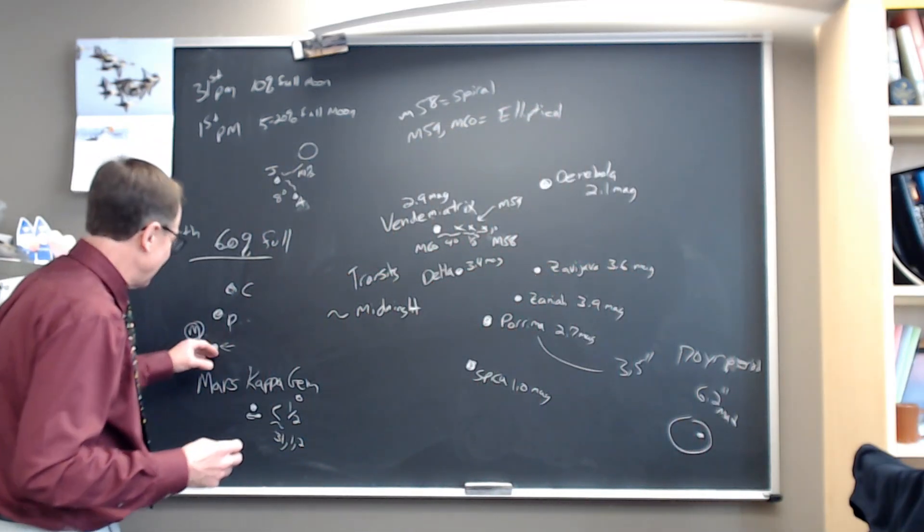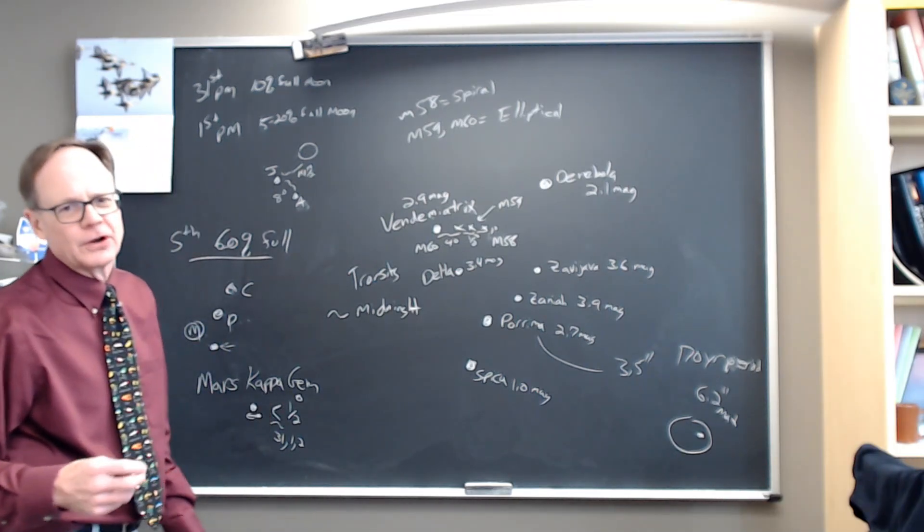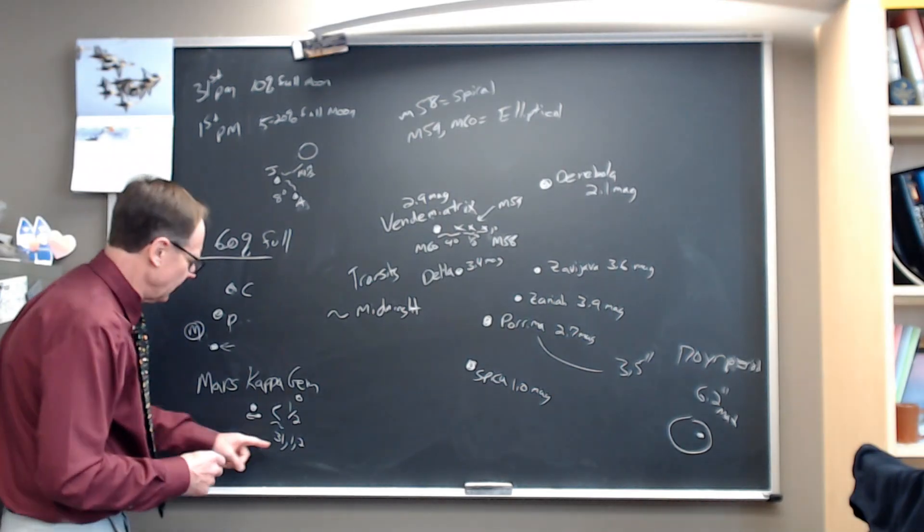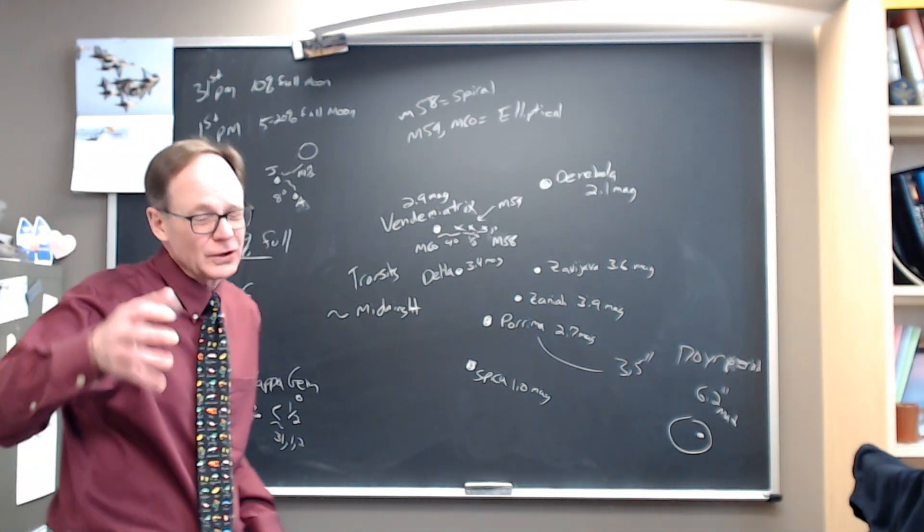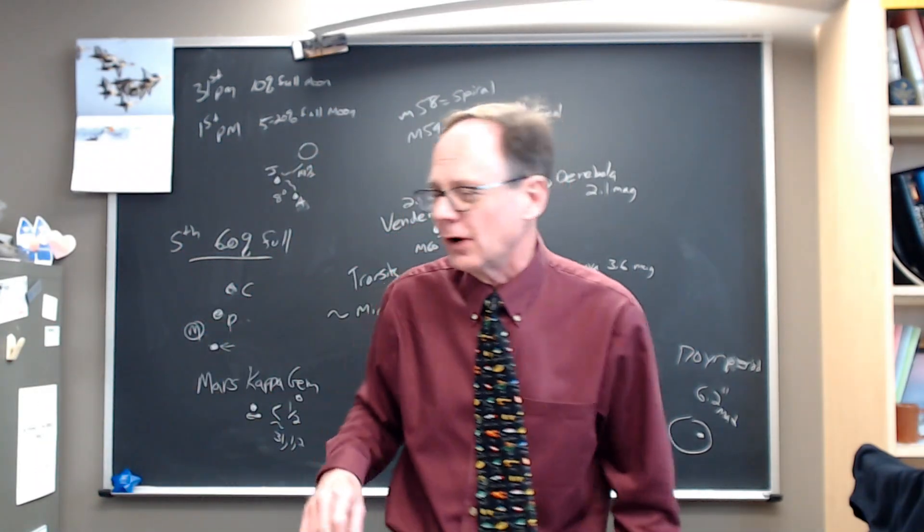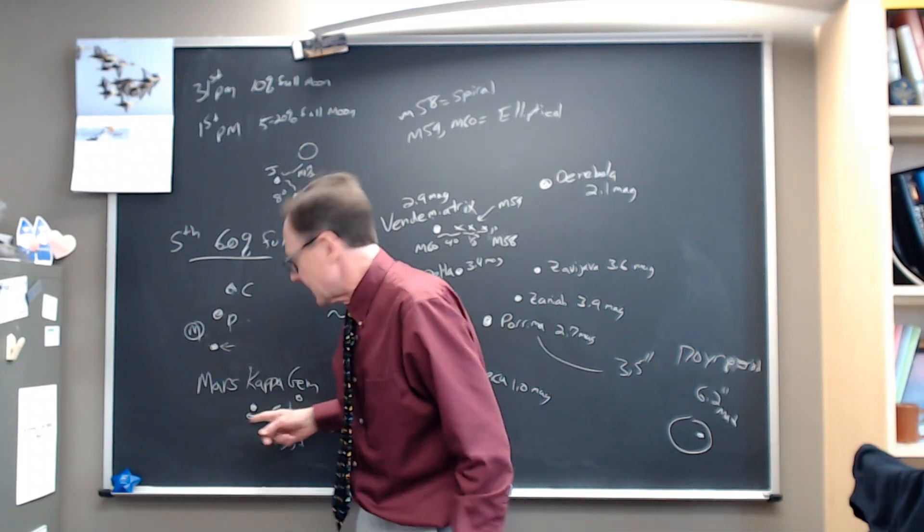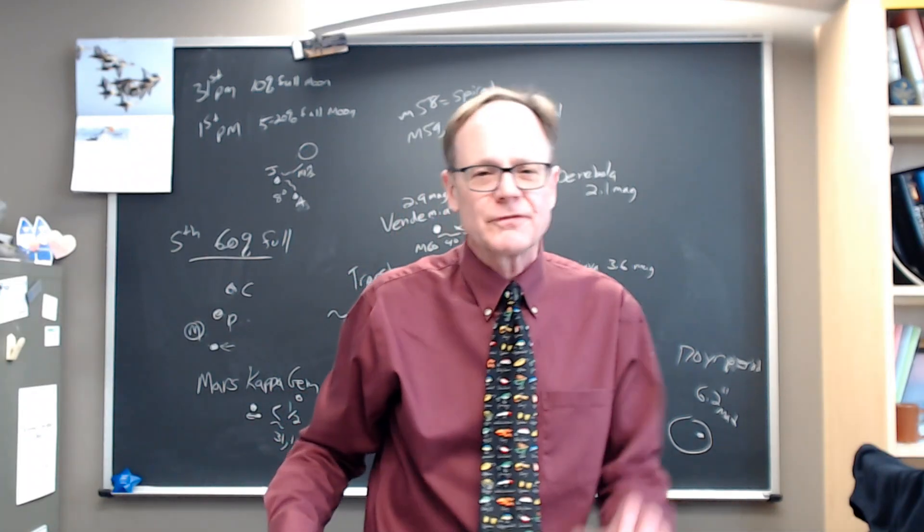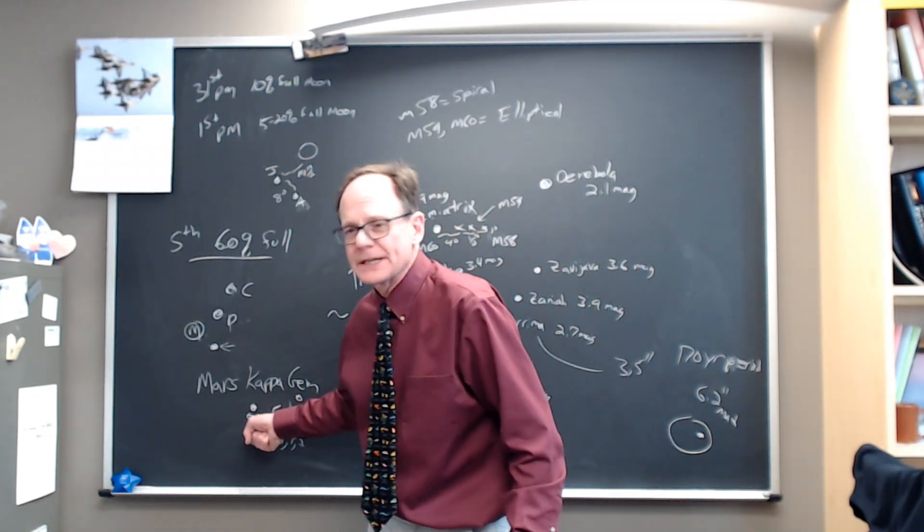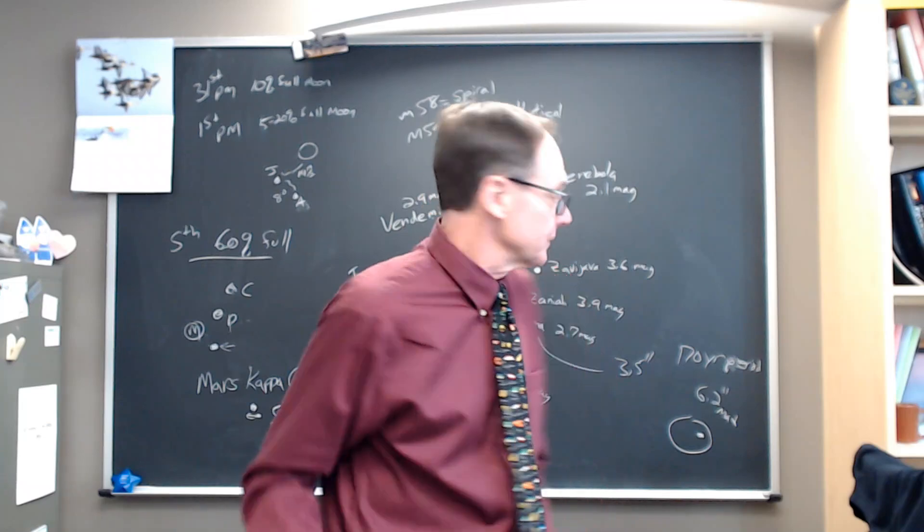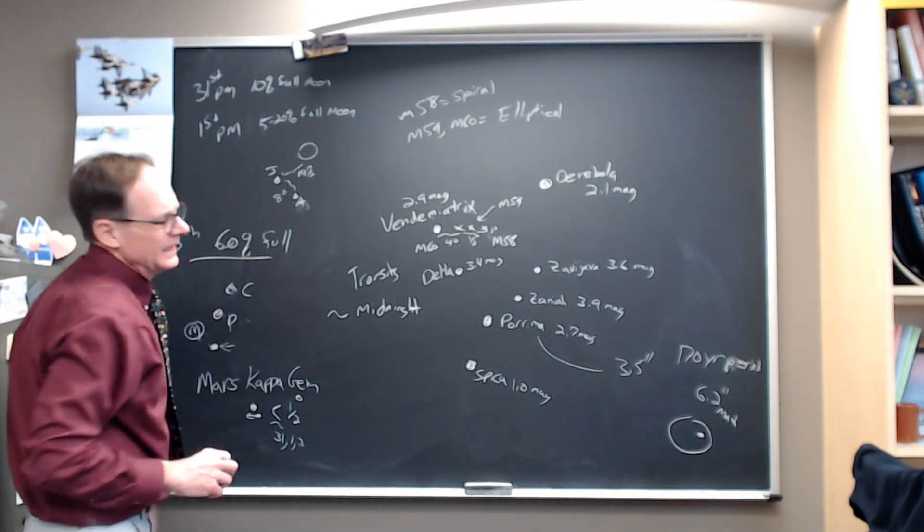Mars is passing, as we talked about last week, passing Kappa Geminorium, this relatively faint star in there. On the 31st, the 1st, and the 2nd, it will be less than about, or on the order of, half a degree away. So half a finger width at arm's length away from the star. And then that distance will open up quite a bit by week's end. So the first few nights of the week, get your binoculars out and enjoy that star that's sitting right next to Mars this week. So that's what we've got with the moon and the planets in the evening sky.